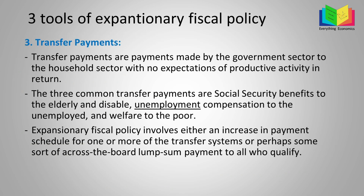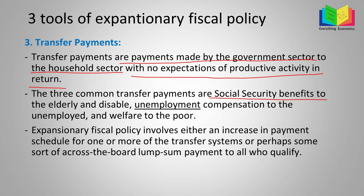The third tool is transfer payments — payments made by the government sector to the household sector with no expectation of productive activity in return. The government gives people money and does not make them accountable for it. The three common transfer payments are: social security benefits to the elderly and disabled, unemployment compensation to the unemployed, and welfare to the poor. The government does not expect to get this money back.